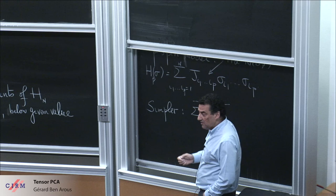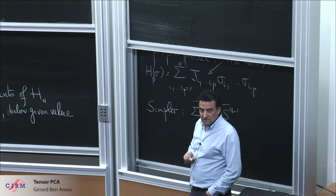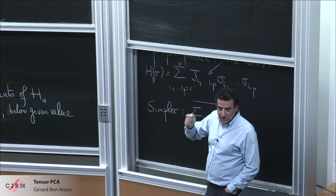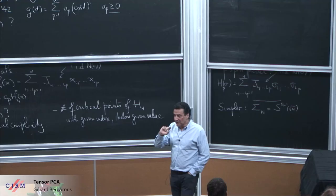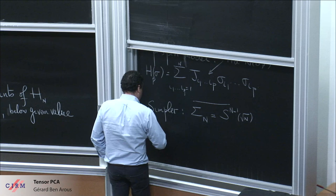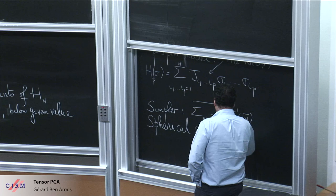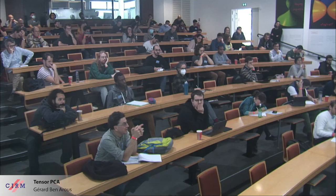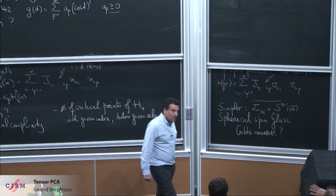Instead of taking spins to be plus or minus one, you take them to be on the sphere. There's a twist: a point in {±1}^N lies on the sphere of radius sqrt(N). Physicists work with radius sqrt(N) while topologists work with radius one — just a normalization difference. So the spherical models: same question. What can you say about the Gibbs measure of these guys?